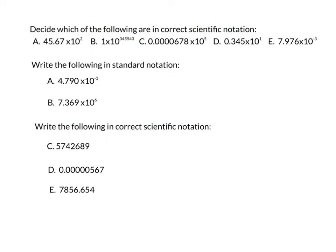Here I've given you a few problems to try. For the first question, decide which of the following are incorrect scientific notation. You should pause the video while you're going through these. Letter A is not correct scientific notation because we have two numbers in front of the decimal place, so this is not correct.